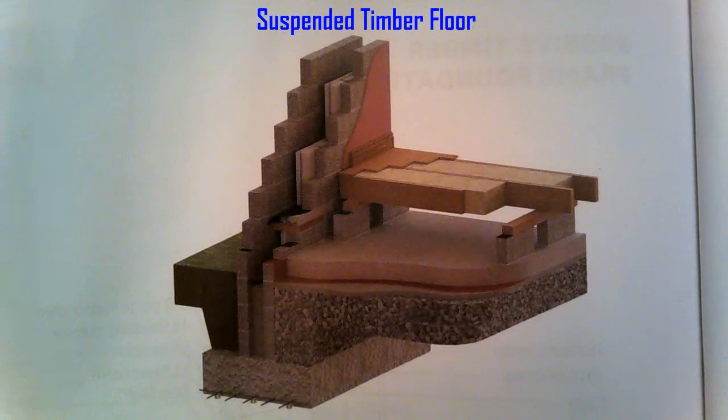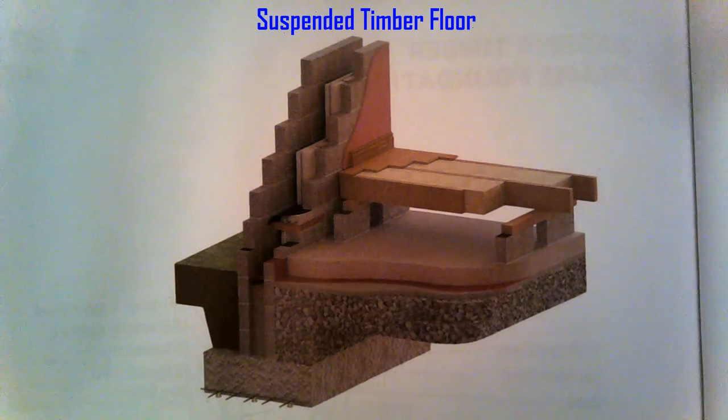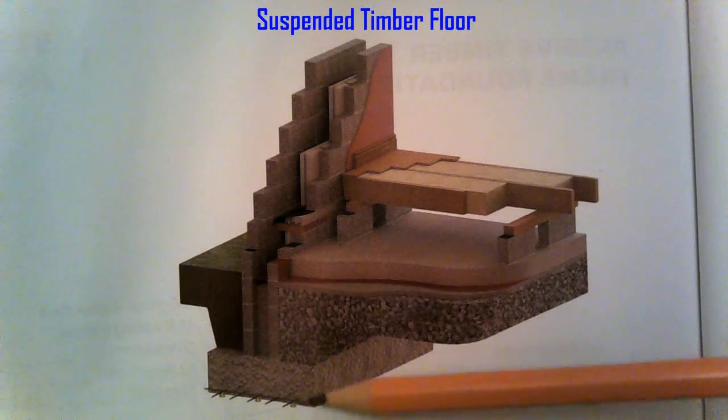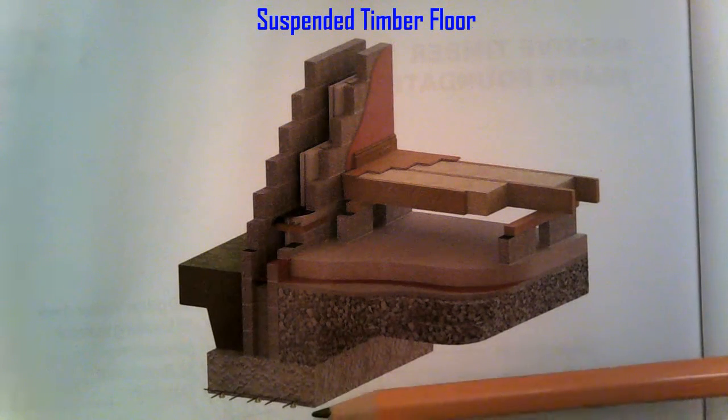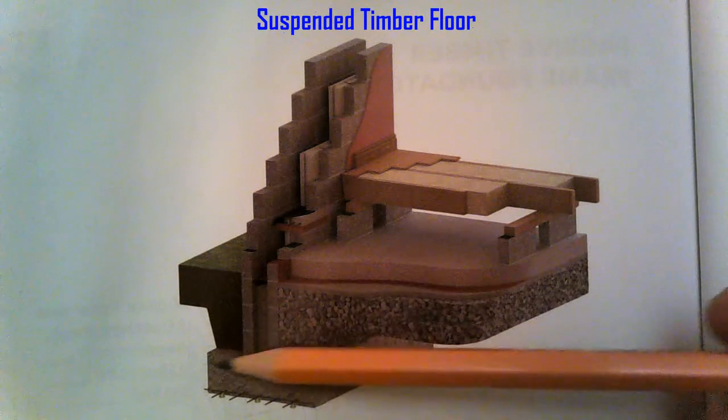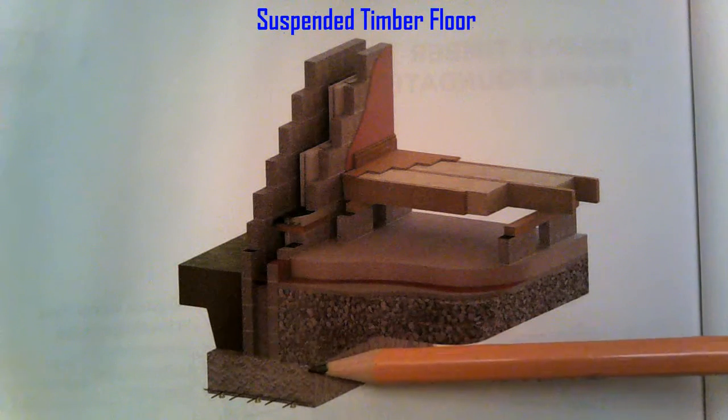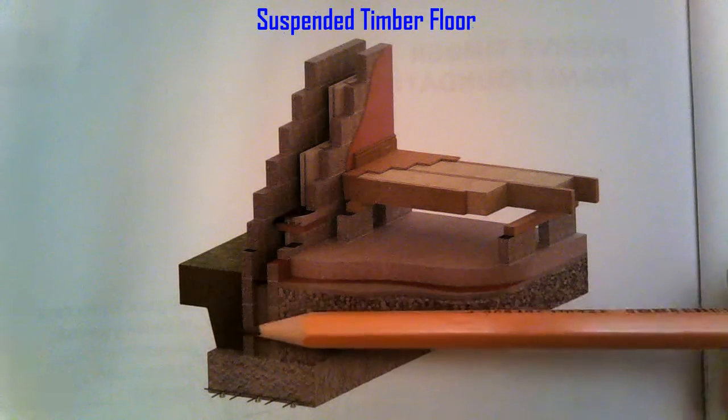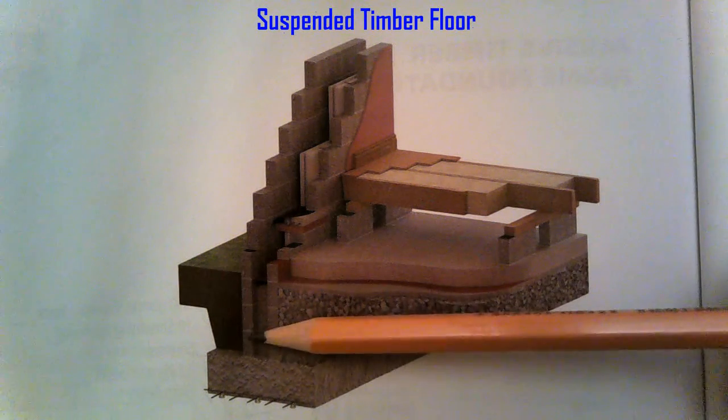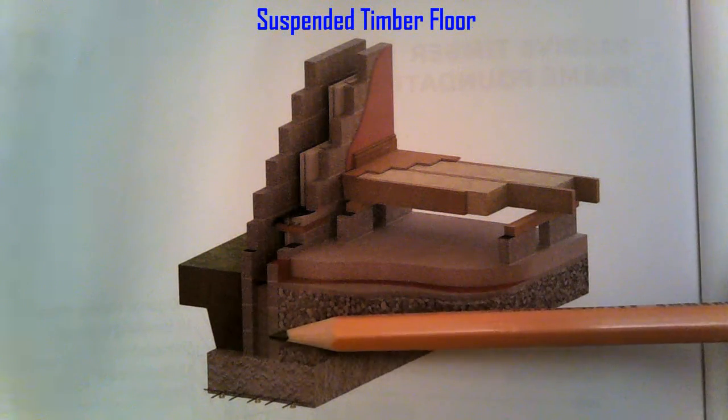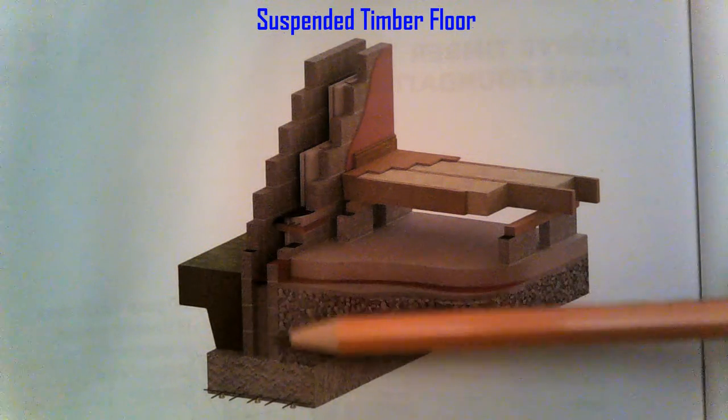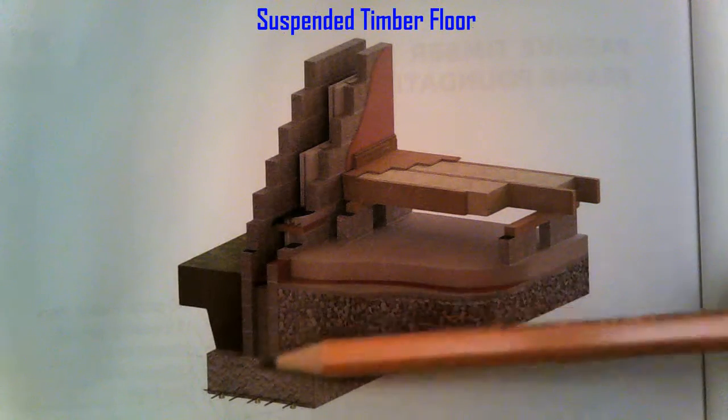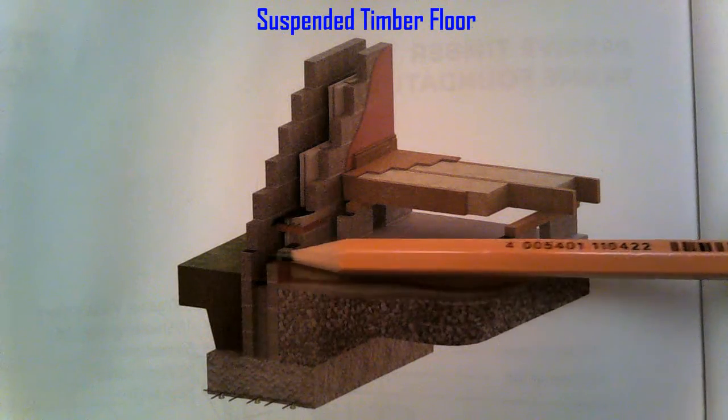We're looking at a suspended timber floor detail here. Starting off with a traditional strip foundation, 350 depth by 1050 wide. It's your block detail, so 350 wall: 100mm outside leaf, 150mm cavity, and 100mm inside leaf, same as what we've done on previous strip foundation. Come up your four blocks for your DPC.